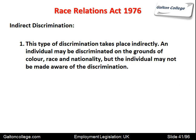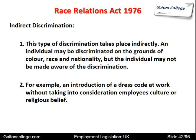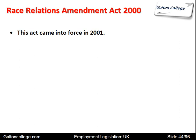Indirect discrimination is more insidious. This type of discrimination is indirect — an individual may be discriminated against on the grounds of colour, race, and nationality, but the individual may not be made aware of the discrimination. It's still utterly wrong, but the person is discriminated against and they don't know it. It's just not explicit, and it's difficult to prove as a consequence. It could be, for example, the introduction of a dress code at work without taking into consideration the employee's culture or religious beliefs. This particular law was amended in 2000 and came into force in 2001.